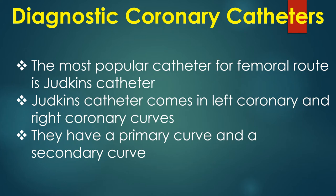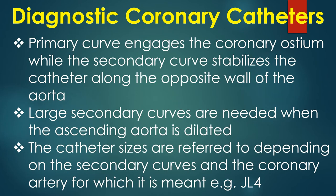The Judkins catheter comes in left coronary and right coronary curves. They have a primary curve and a secondary curve. The primary curve engages the coronary ostium while the secondary curve stabilizes the catheter along the opposite wall of the aorta. Large secondary curves are needed when the ascending aorta is dilated. Catheter sizes are referred to depending on the secondary curve and the coronary artery for which it is meant — for example, JL4.